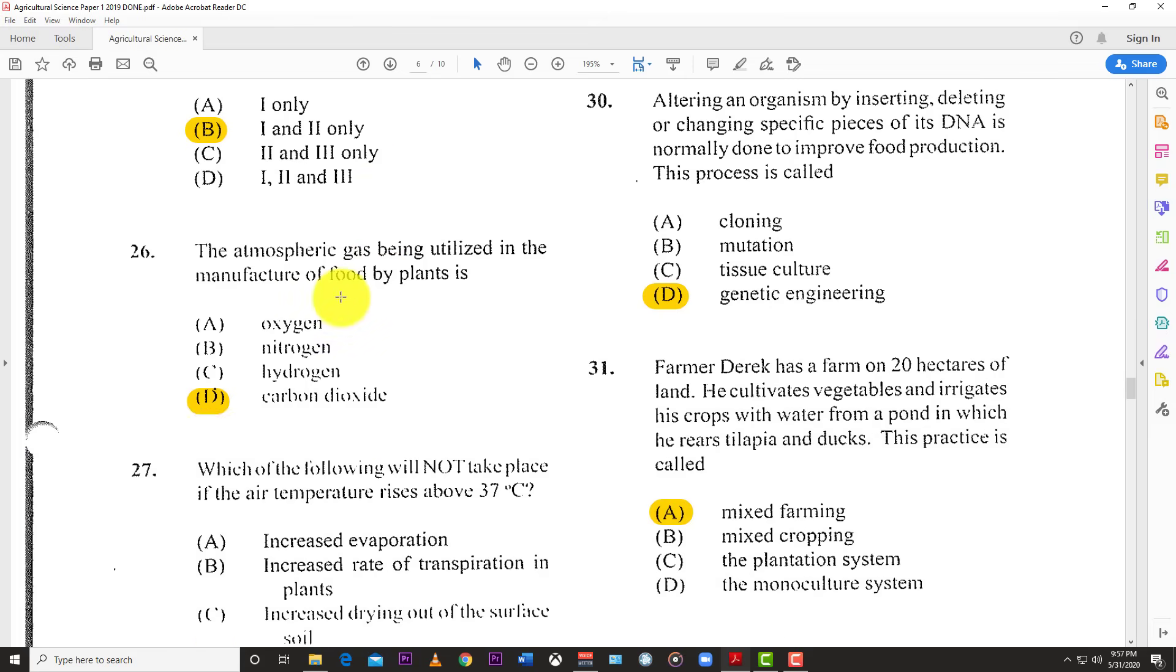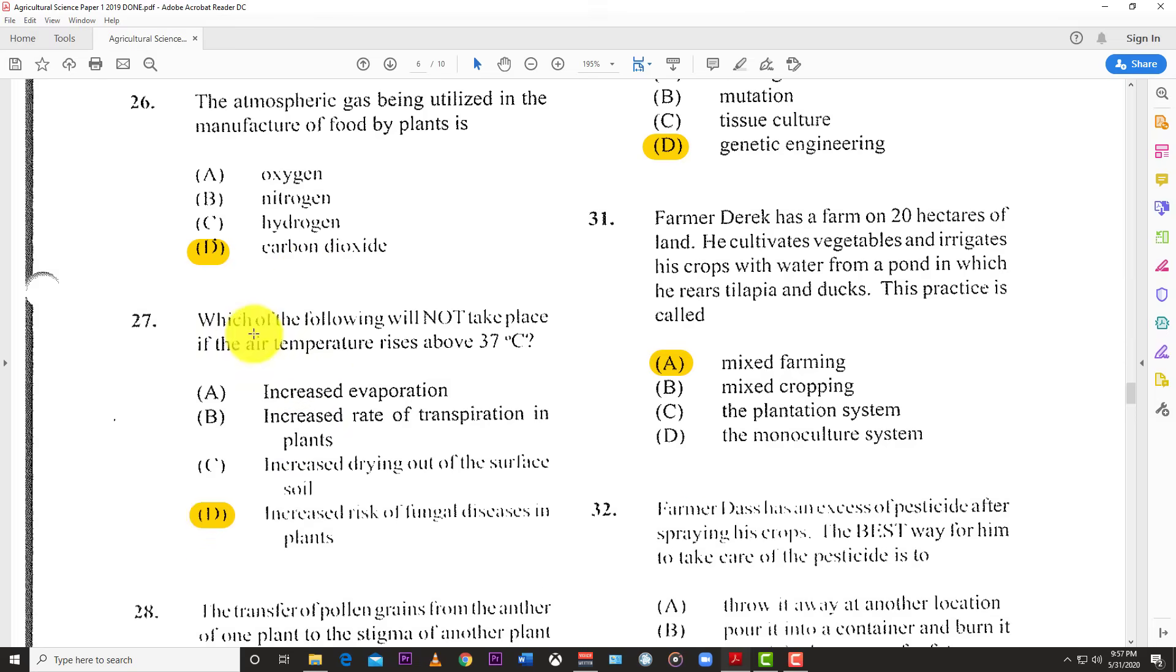Number 26: The atmospheric gas being utilized in the modern manufacture of food by plants is carbon dioxide for photosynthesis. Number 27: Which of the following will not take place if air temperature rises above 37 degrees Celsius? Increased evaporation, increased rate of respiration, and increased drying of surface soil will all occur. The answer is decreased risk of fungal disease in plants, because fungus needs moisture to flourish, so if it's getting hotter, you have less moisture.